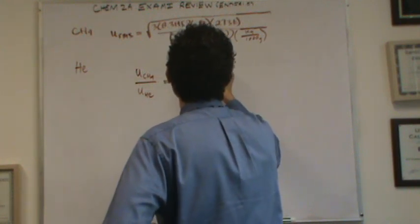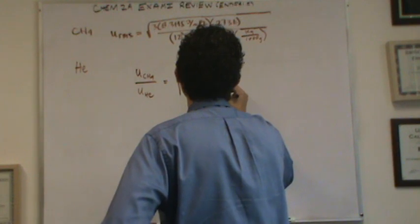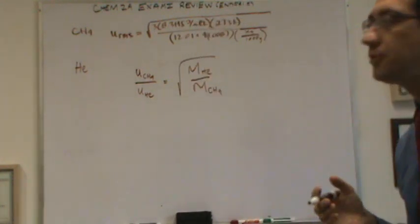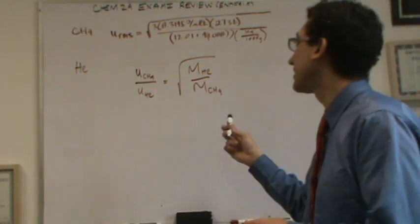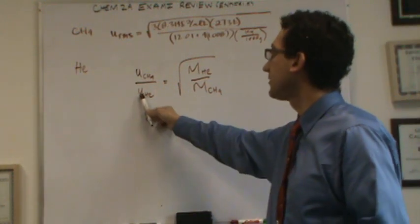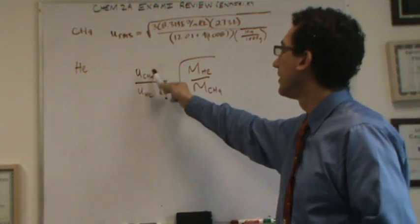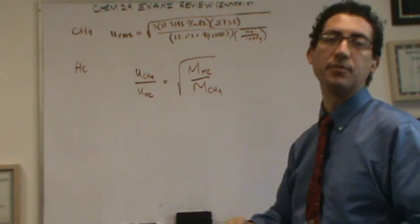The velocity ratio is equal to the square root of the inverse of the molar masses. So helium on top, CH4 on bottom. And you would expect, in general, lighter things to go faster. So helium's going to be moving much faster than CH4. And you'll see this mathematically turn out. But if this is faster, then this ratio is going to be less than 1.